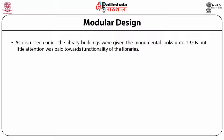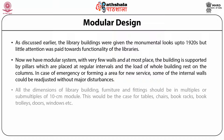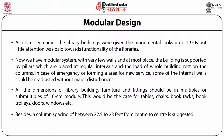Modular Design. Library buildings were given monumental looks up to the 1920s, but very little attention was paid towards functionality. Now we have a modular system with very few walls; most of the building is supported by pillars placed at regular intervals and the load of the full building rests on these columns. In case of emergency or forming area for new services, some internal walls could be readjusted without major disturbances. All dimensions of library building furniture and fittings should be in multiples of 10 cm module. This would ease arrangements for tables, chairs, book racks, book trolleys, doors, and windows. A column spacing of between 22.5 to 30 feet from center to center is suggested. Thus, today's library should be of modular design.